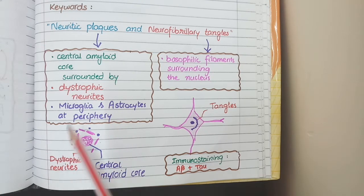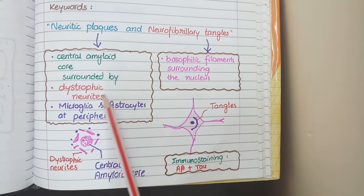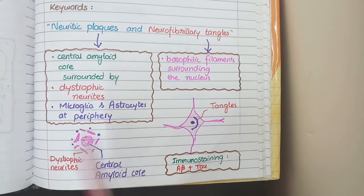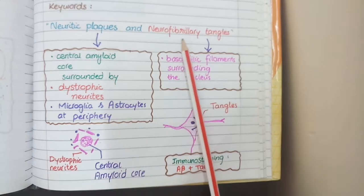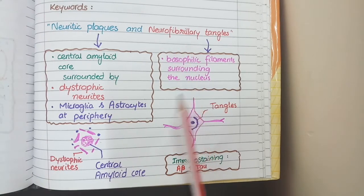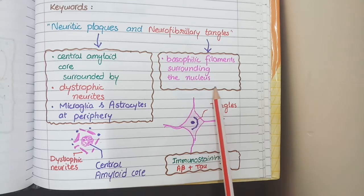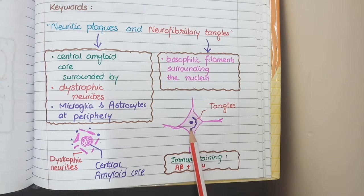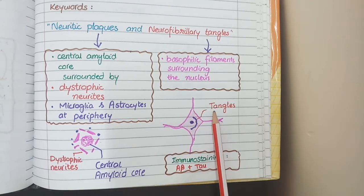So in neuritic plaques, you see a central amyloid core surrounded by dystrophic neurites, and at the periphery there are microglia and astrocytes. The next lesion is neurofibrillary tangles, which are made of tau protein deposits and are visible as basophilic filaments surrounding the nucleus. You can see in this diagram that surrounding the nucleus is a basophilic filament-like structure that is neurofibrillary tangles, made of tau protein.